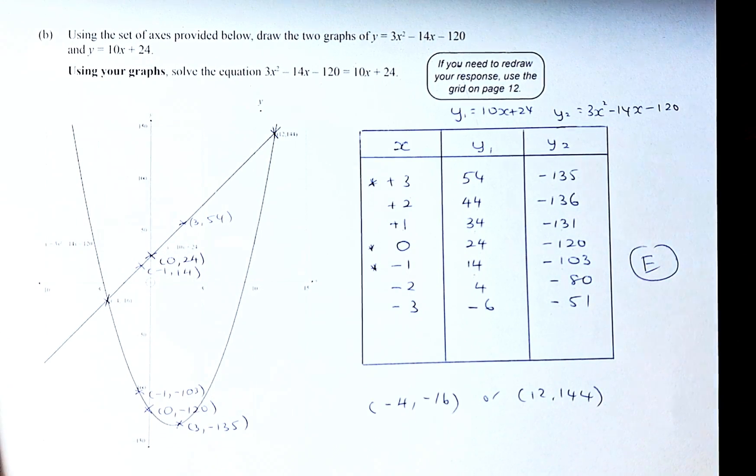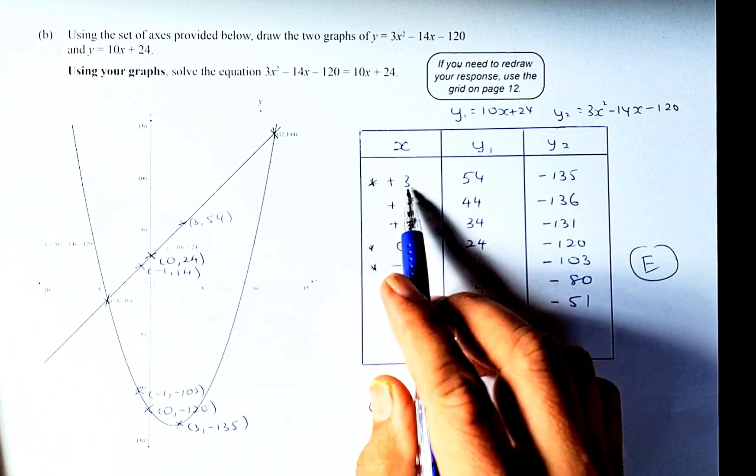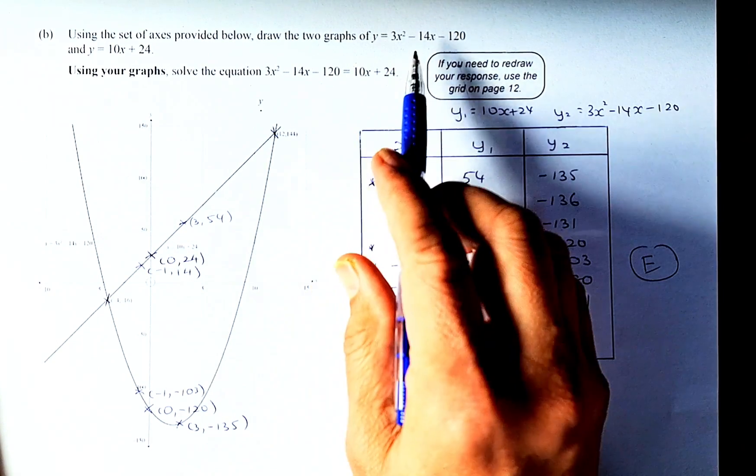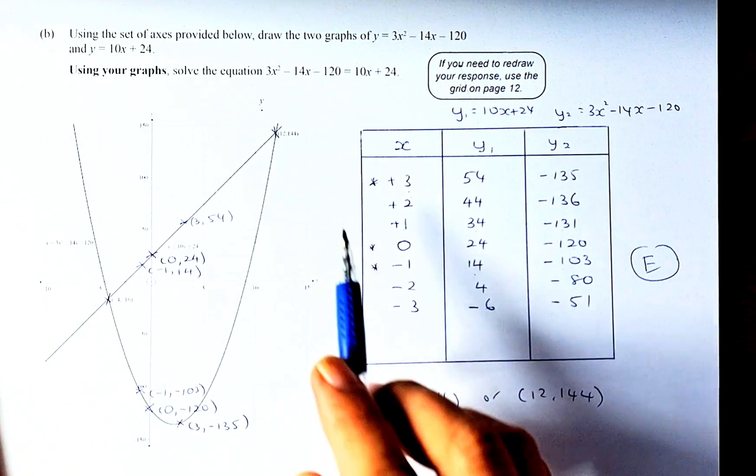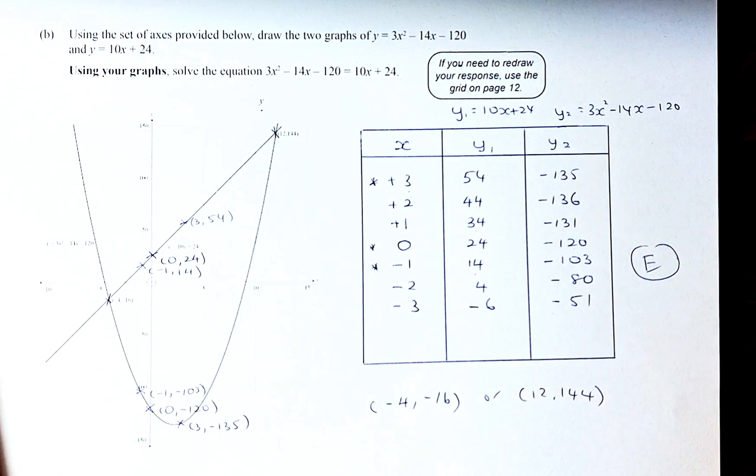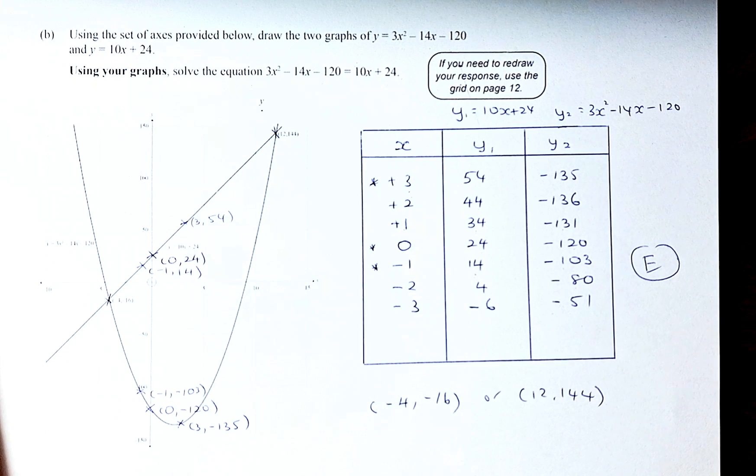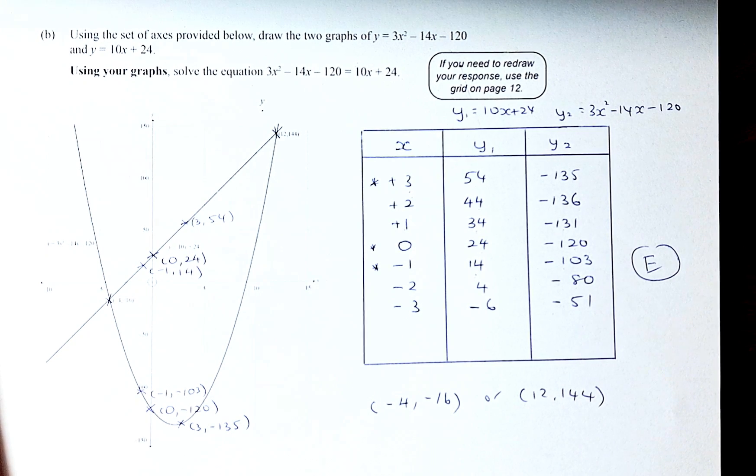If you don't have a graphic calculator, you have to substitute values like 3, 0, and -1 into both equations to generate the table. It takes more time, but with the graphic calculator you can do it very quickly. Hope you understand this. I'll see you for the last question, which is question 3c. Cheers everyone, have a great day.